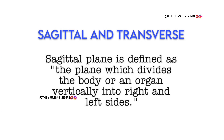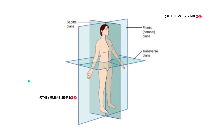The sagittal plane divides the body or an organ vertically into right and left sides. The sagittal plane divides the left and right, so we call it the sagittal plane.